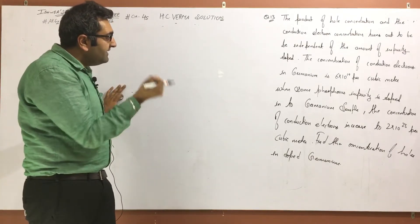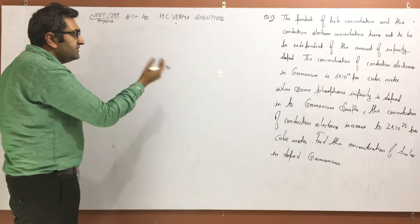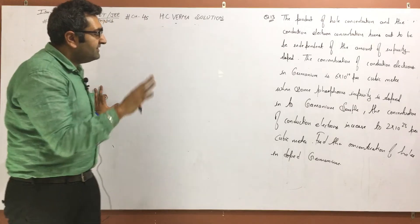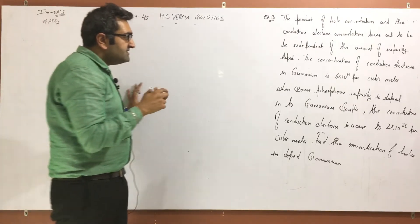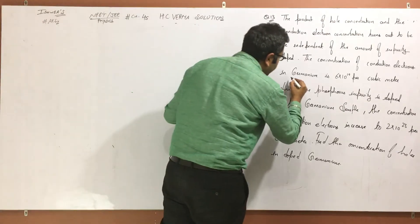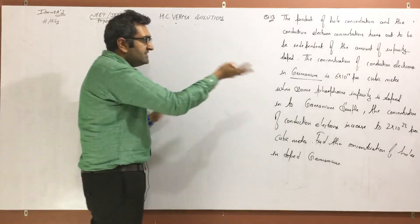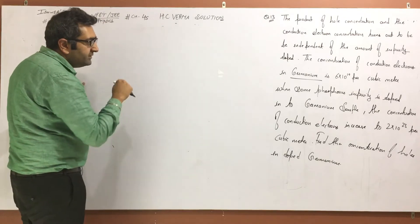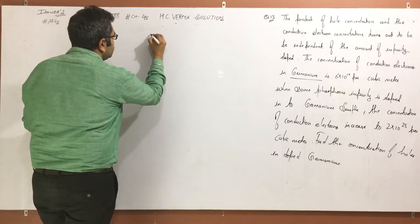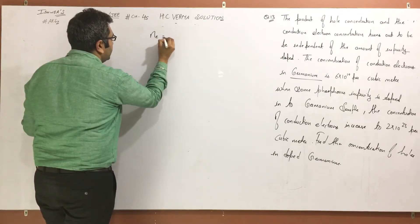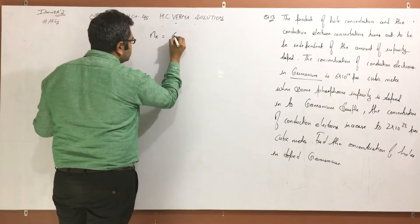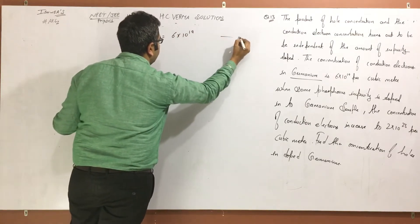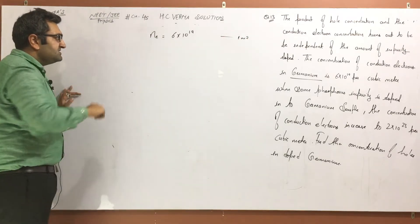Question number 12 is similar. So let's see the given data. The semiconductor here is germanium. It says that the conduction electron concentration is 6 into 10 raised to power 19. So the number of electrons is equal to 6 into 10 raised to power 19 per meter cube. In the pure state, number of electrons is equal to number of holes.